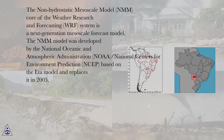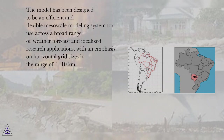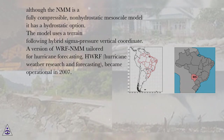The NMM model was developed by the National Oceanic and Atmospheric Administration (NOAA) / National Centers for Environmental Prediction (NCEP), based on the ETA model, and replaced it in 2005. The model has been designed to be an efficient and flexible mesoscale modeling system for use across a broad range of weather forecast and idealized research applications, with an emphasis on horizontal grid sizes in the range of 1 to 10 kilometers. Although the NMM is a fully compressible, non-hydrostatic mesoscale model, it has a hydrostatic option. The model uses a terrain-following hybrid sigma-pressure vertical coordinate.